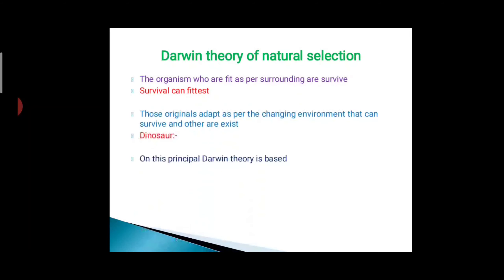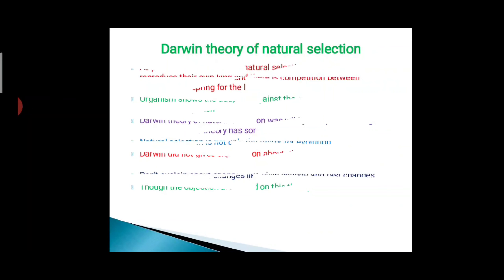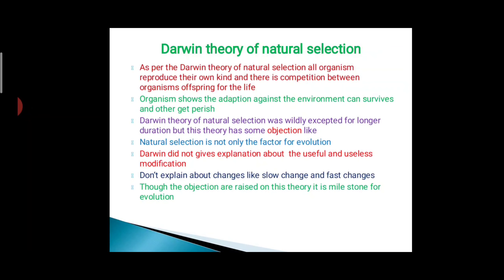An example of this is the dinosaurs. On this principle, Darwin's theory is based. Darwin published the book named Origin of Species. Now we are going to discuss the Darwin Theory of Natural Selection in more detail.